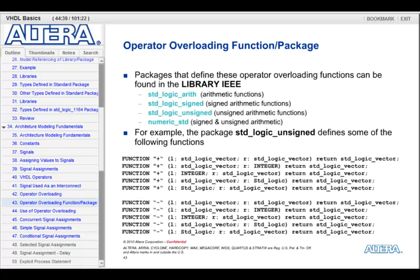IEEE-defined data types have already been overloaded for us to use with the same operators as the standard data types in VHDL. If we go into the packages that define overloaded functions in the IEEE library — such as standard logic ARITH, standard logic signed, standard logic unsigned, and numeric standard — we'd find these overloaded operators. At the bottom of this slide, you can see example functions defined in the standard logic unsigned package. You can see the plus sign — notice it's in double quotes — has been overloaded to accept a standard logic vector and an integer, two standard logic vectors, or a standard logic vector and a single-bit standard logic, and return the result as a standard logic vector. The same applies to the minus sign.